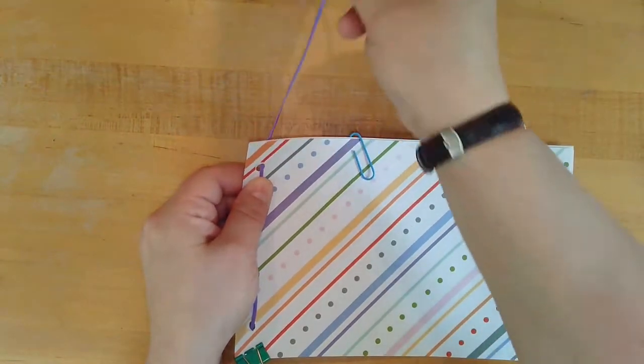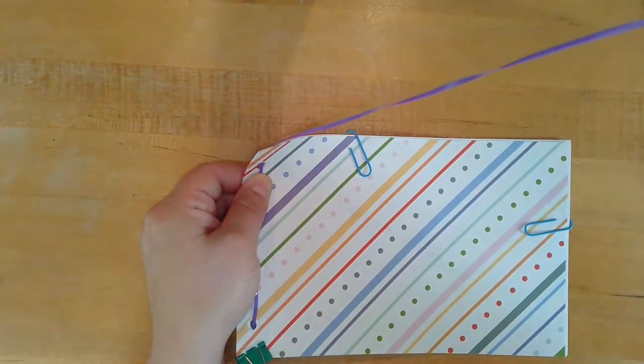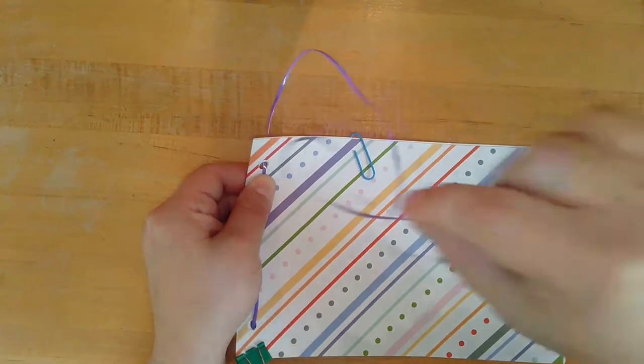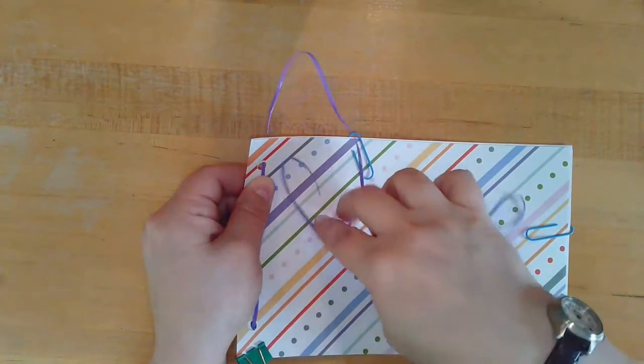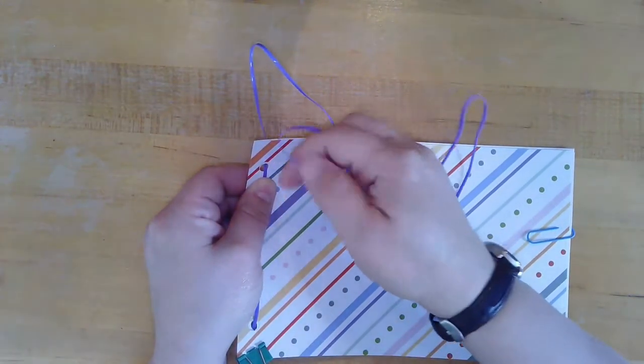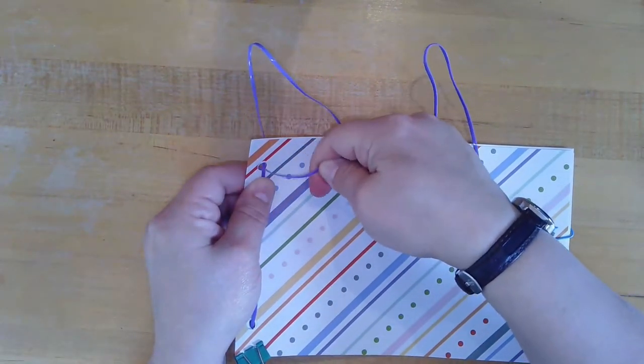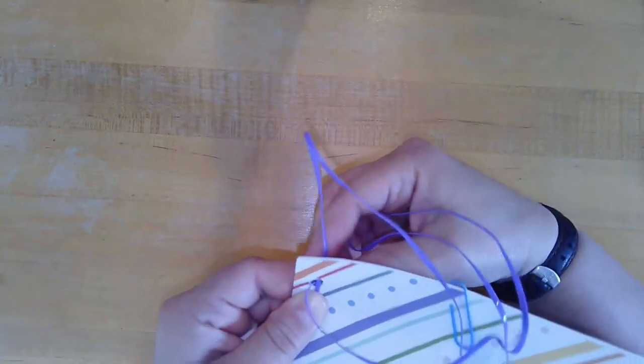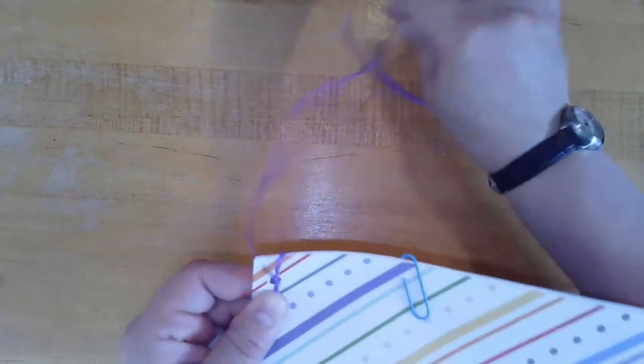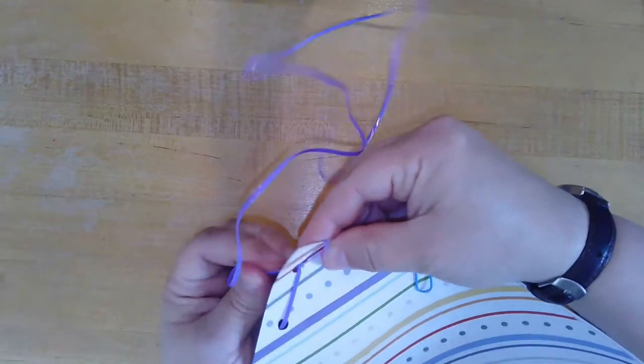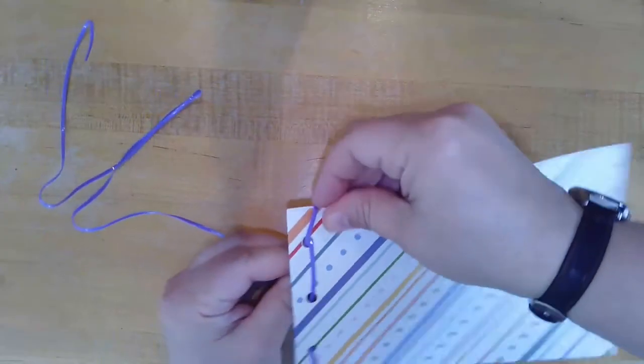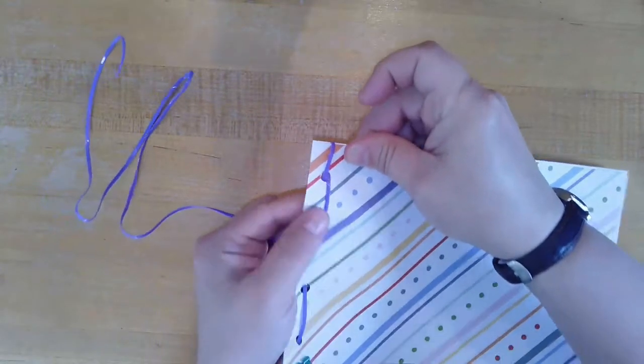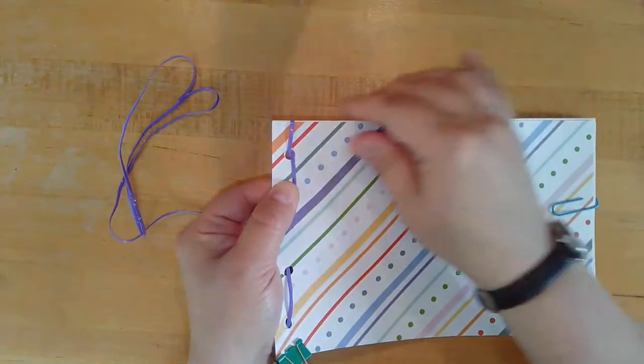You're going to take your loose string at the top, bring it down from the top, into the top hole from the front, pushing it through to the back. Again, always making sure that the jelly string is lying flat.